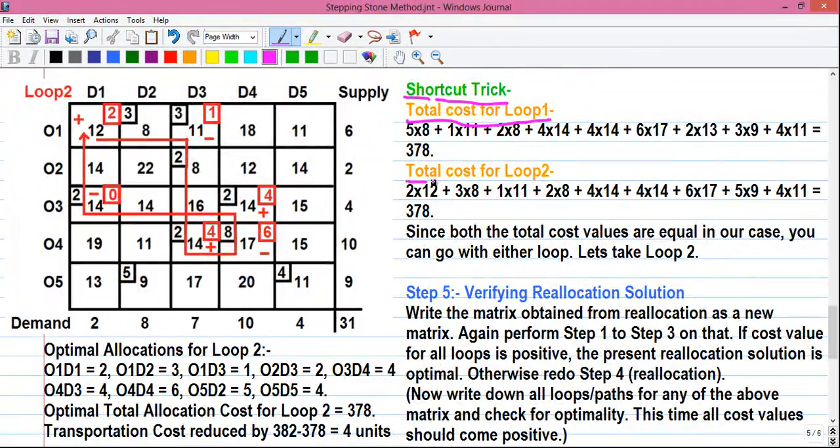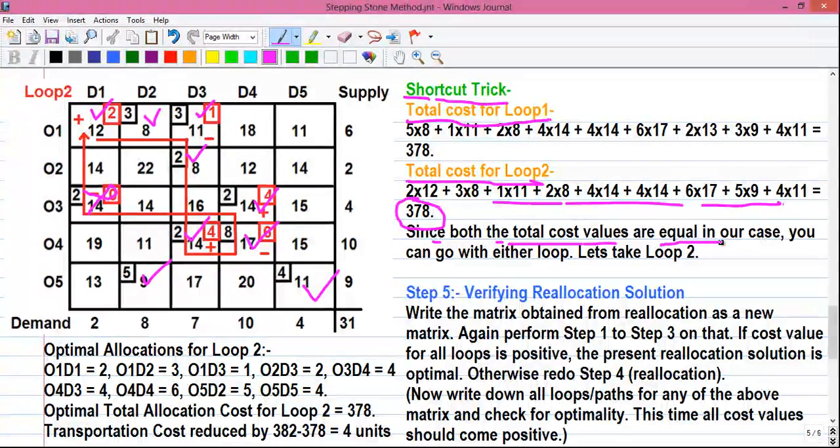Similarly calculate the total cost for loop 2 also which is given by 2 into 12 plus 3 into 8 plus 1 into 11 plus 2 into 8 plus 4 into 14 again plus 4 into 14 plus 6 into 17 plus 5 into 9 plus 4 into 11. So adding them all up you will get 378. Since both the total cost values are equal in our case you can go with either loop. So let's take the loop 2.